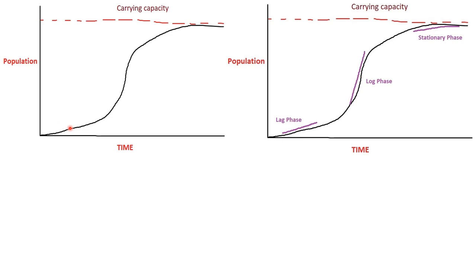Now let's look at the normal population growth curve from biology. As time increases, population grows following a sigmoid logistic growth curve. The population grows until at a certain point it reaches equilibrium — the natural equilibrium or carrying capacity. In the growing phase, there are three phases: initially growth is slow (the lag phase), then growth becomes very high (the log phase), and finally the population stabilizes at the stationary phase, reaching the carrying capacity limit.